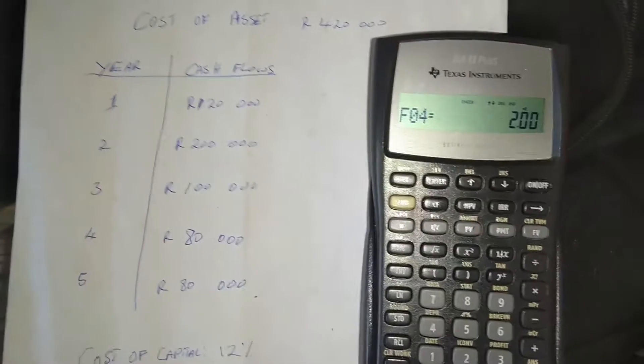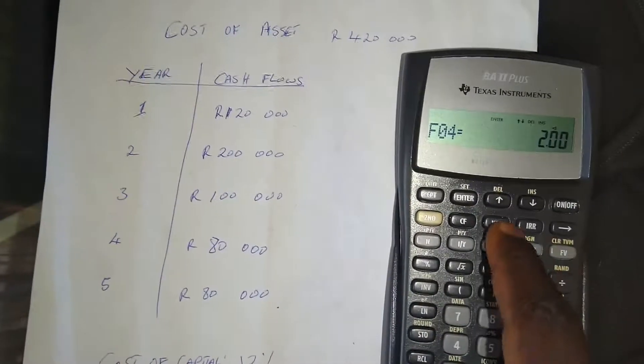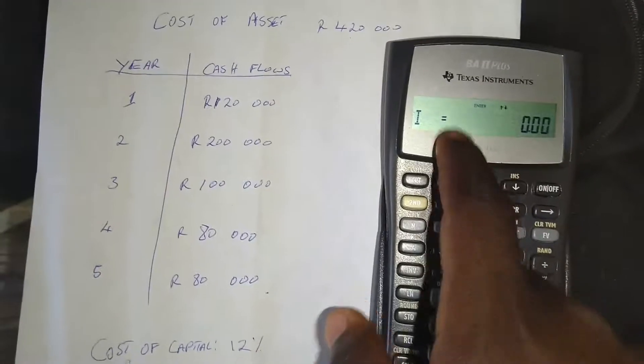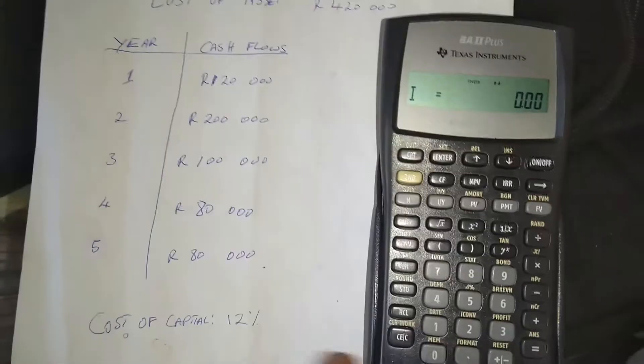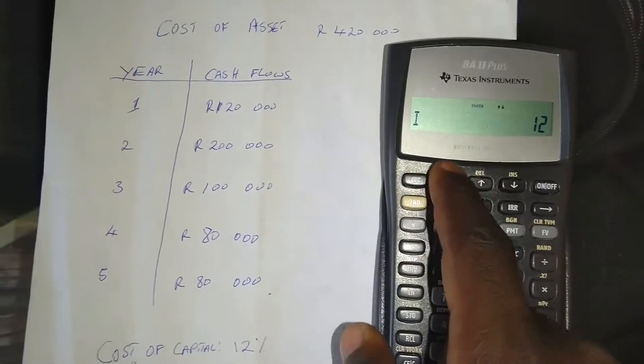Now that we have all our cash flows input here. The next thing that we need to do is to compute the NPV. So you press NPV. Now you can see here, it's asking us what the interest rate is. And we're told that the cost of capital is 12%. So we're going to put the 12% and then enter.